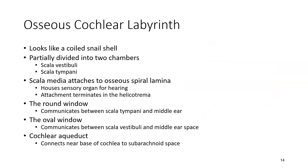The osseous cochlear labyrinth looks like a coiled snail shell matching the shape of the cochlea. It's divided into two chambers called the scala vestibule and the scala tympani. In between those two chambers is the scala media, which attaches to the osseous spiral lamina.